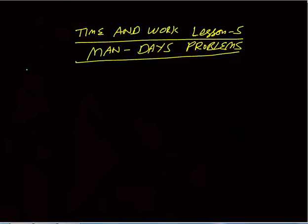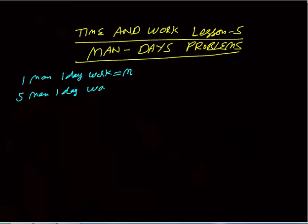In these cases, first we have some assumptions. If I say one man one day work, we always assume it as m units. So five men one day work would be m plus m plus m plus m plus m — that is five m. One man is doing m units, so five men in one day will do five m units of work.